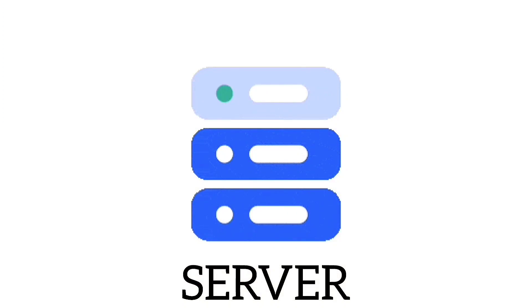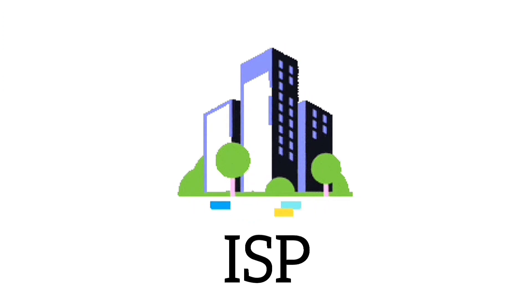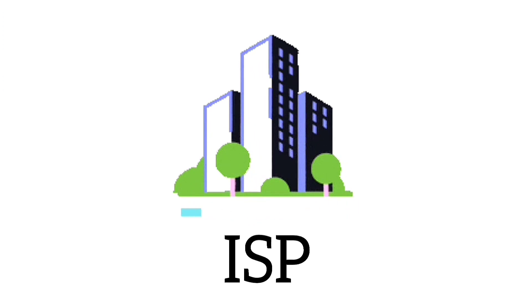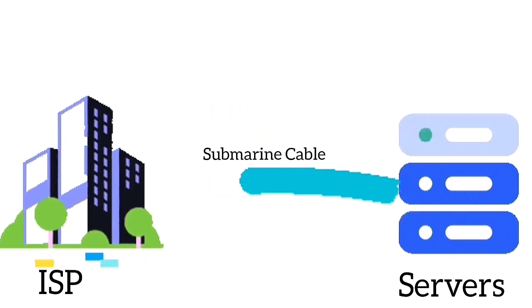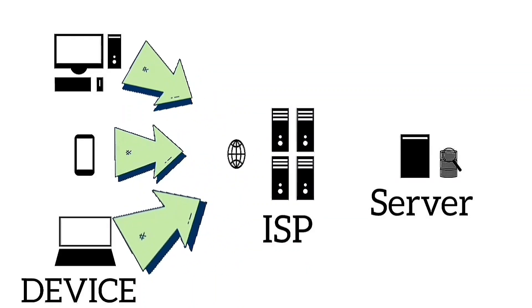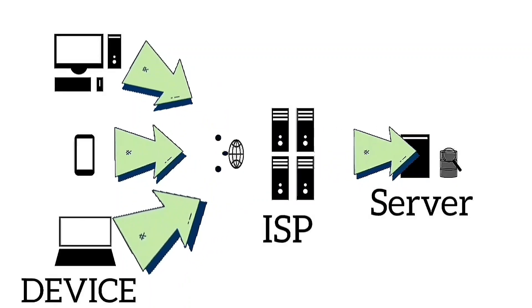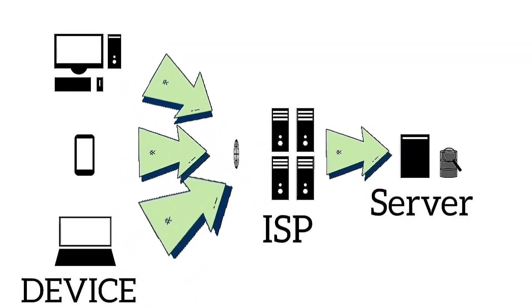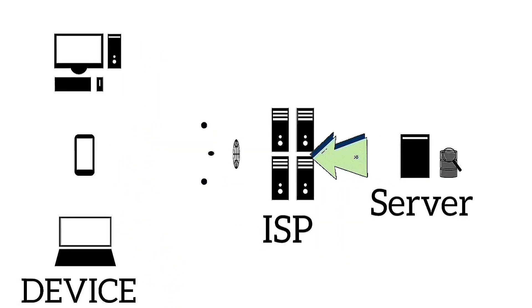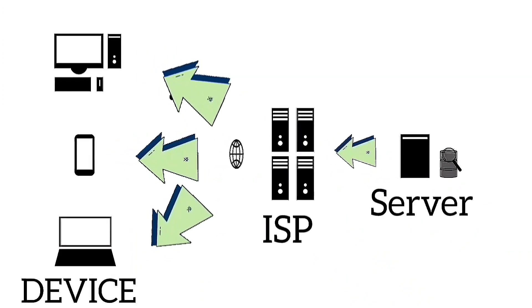How does the internet work? A server stores websites, web pages, online video, and online content. ISPs enable devices to connect to the internet and are interconnected with servers. When you go online, your device connects with the ISP. When you search online, your device sends a request to your ISP. ISPs find the fastest route to the right server. The server sends the requested content back to the ISP, then it reaches your device. This process happens almost instantly.